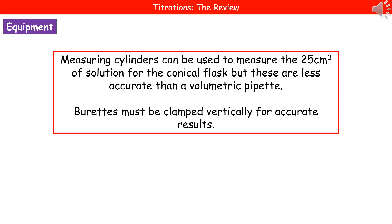One of the other favourite questions linked to titrations is how we could improve accuracy. They will have given you a basic overview of the method in the question, and all you've got to do is critically look at that and think how we could make it more accurate. For example, if they said a measuring cylinder was used to measure the 25 centimetres cubed, measuring cylinders are always less accurate than volumetric pipettes, so one improvement would be to use a volumetric pipette instead.